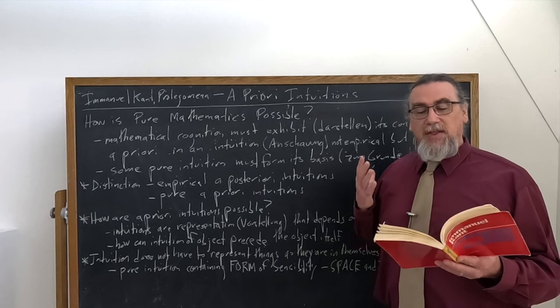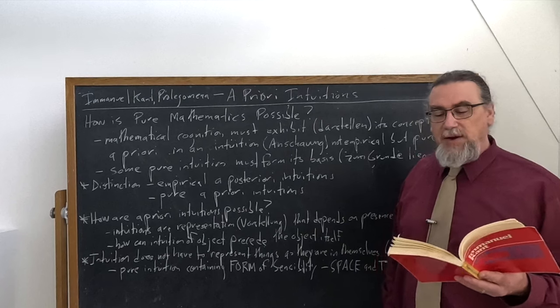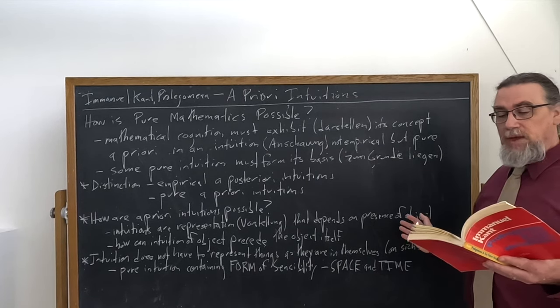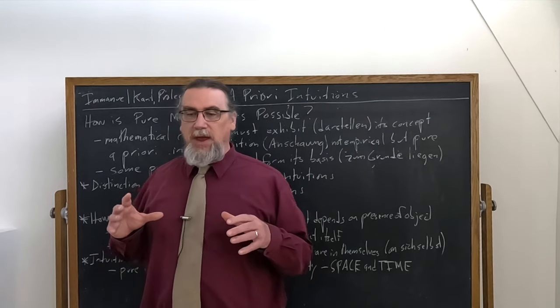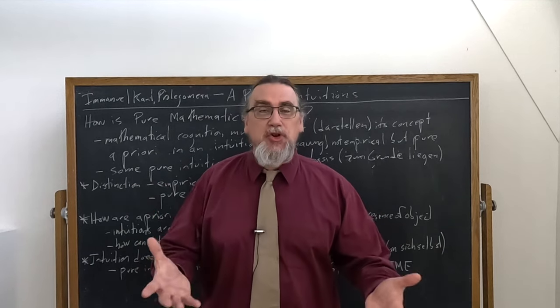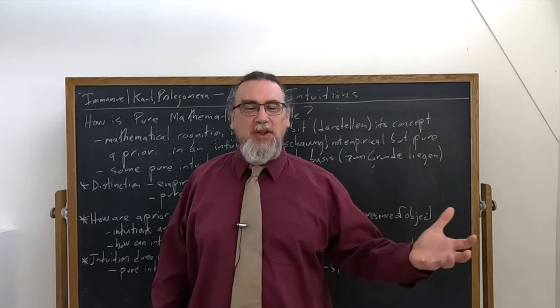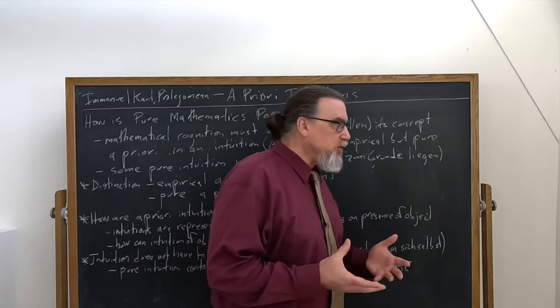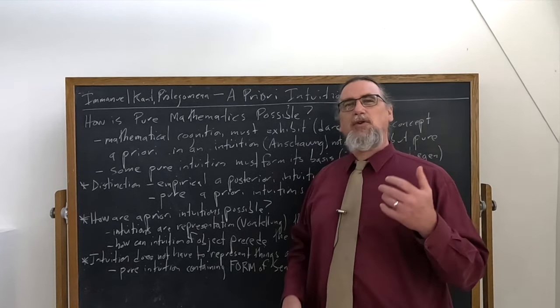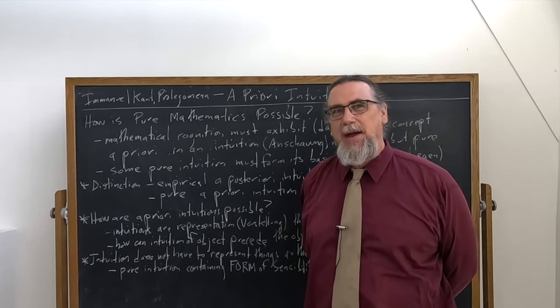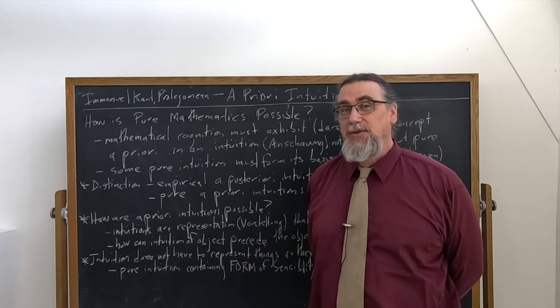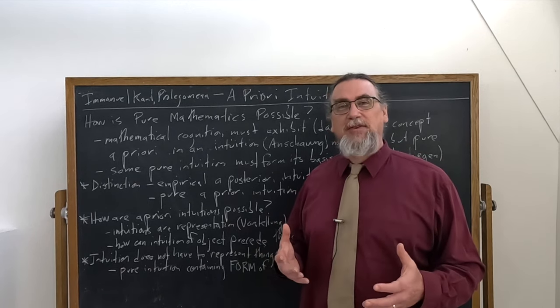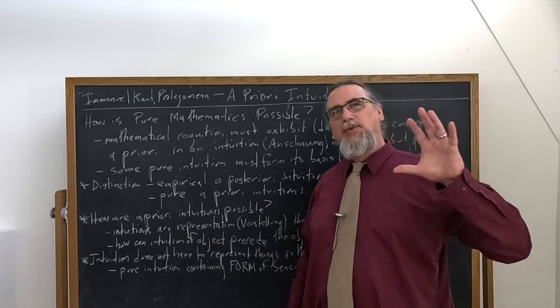So this is the very problem that he's dealing with. And then he says, listen, think about concepts that we can form a priori. They contain nothing but the thought of an object in general. We can universalize or abstract, as others would say. So he says, think about quantity, cause. But even these, he says, in order to be meaningful and significant, need certain concrete use, that is an application to some intuition. So this raises a problem, how can the intuition, if it's going to be a priori, precede the object, which seems like it has to be something that we encounter a posteriori, through experience. How can an intuition of the object precede the object itself?